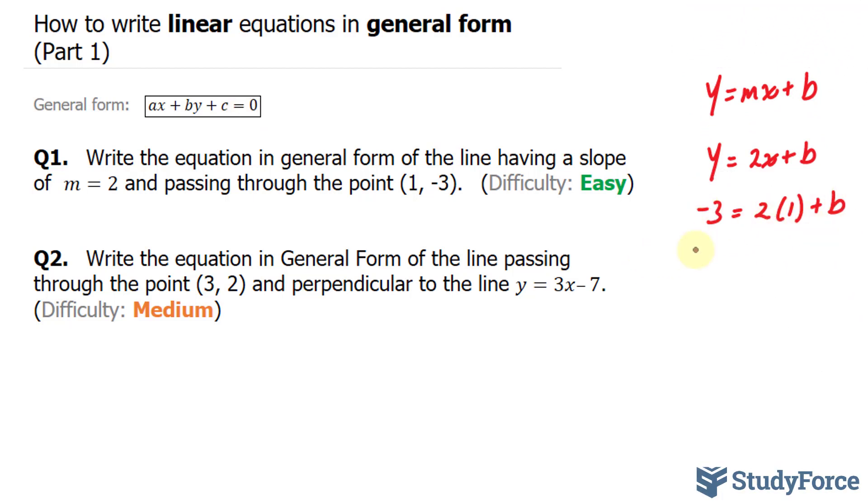So let me go ahead and find b. Negative 3 on the left side, 2 on the right side, bring this over, I end up with negative 3 minus 2 equals b. Therefore, my equation in slope y-intercept form is y equals 2x minus 5.